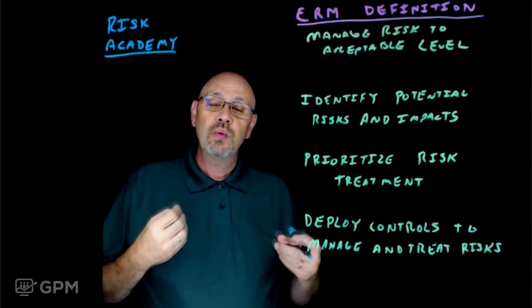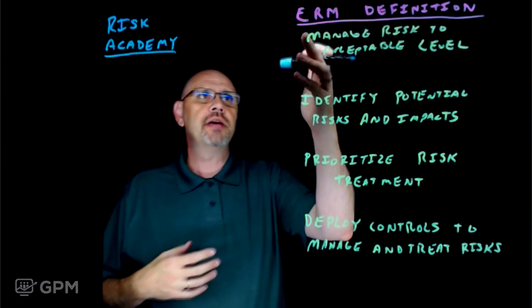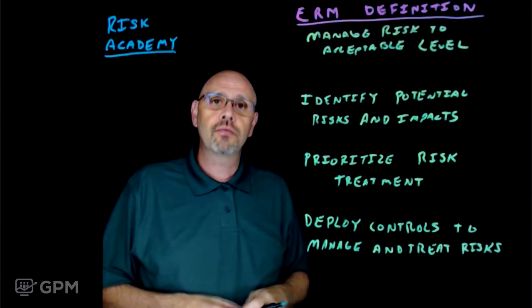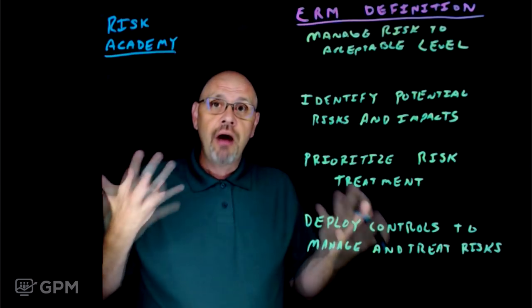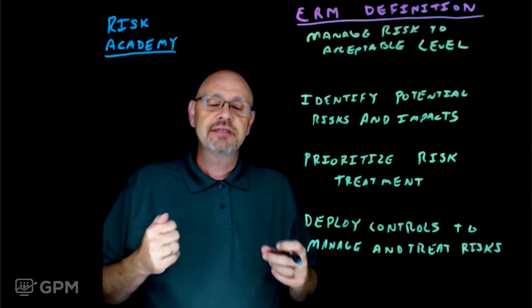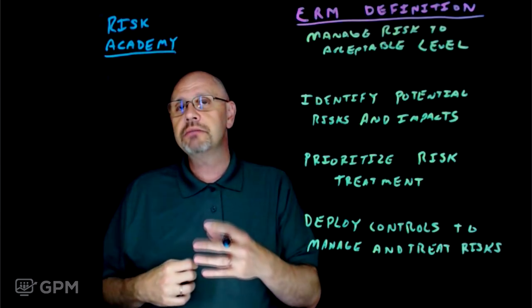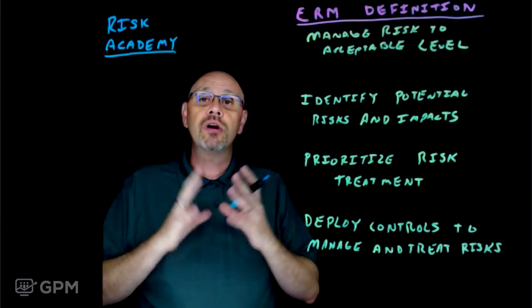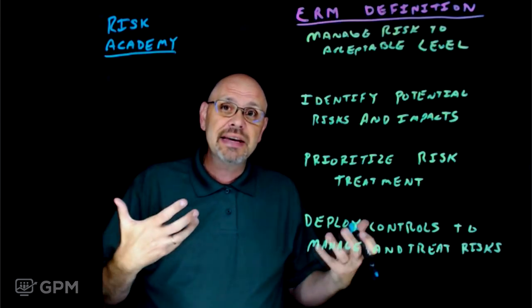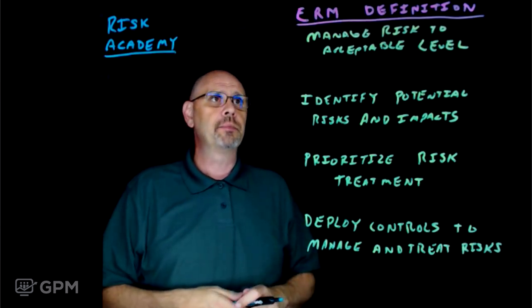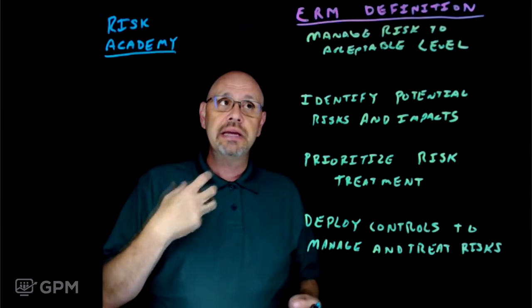The first thing we want to talk about with a risk management program is a term called Enterprise Risk Management, or ERM. What we need to do is define what that actually is. You hear lots of terms — risk program, risk process, risk analysis, risk treatment, risk mitigation. We're going to get into all those things, but before we get there, we need to define what we're talking about. There are several key goals of enterprise risk management that we need to attain.